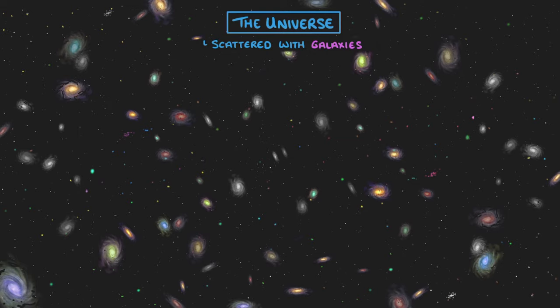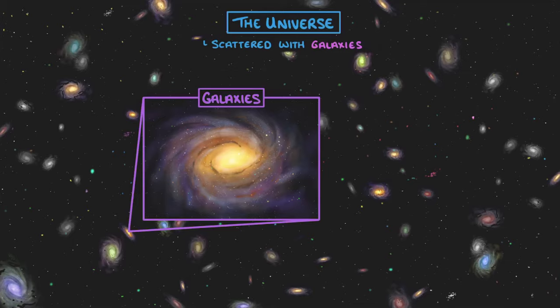So to recap, the universe is a vast expanse of mostly empty space scattered with galaxies, which themselves are collections of billions of stars, many of which have their own solar systems.